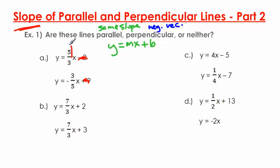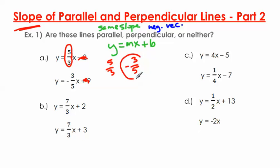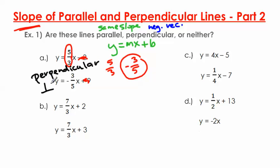Let's take the slope of the first equation: we have 5 over 3. I'm going to find the negative reciprocal of 5 over 3. You flip the fraction and then switch the sign. Flipping gives me 3 over 5, and switching the sign — since it's positive — makes it negative. So the negative reciprocal of 5 over 3 is negative 3 over 5. And notice, that matches the slope of the second equation. Since the slopes are negative reciprocals, these two lines are perpendicular to each other.